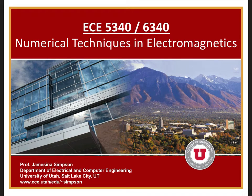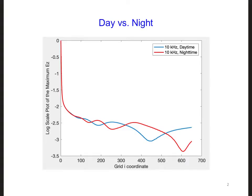Today we will finish the design challenge relating to the development of a backup geolocation system for GPS. Last time we saw that the ionosphere can have a big impact on propagating VLF signals. In this plot, in the region near the antenna, the electric fields attenuate at the same rate in both the daytime and nighttime models. This means that within a few wavelengths of the antenna, the propagation is dominated by the near-field radiation characteristics of the transmitter.